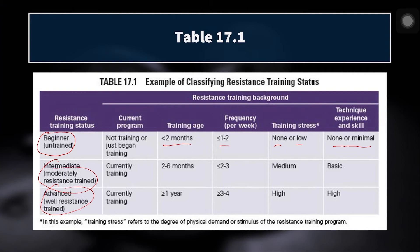An intermediate athlete will have been training for up to six months and can train two to three days a week. Now we want to progress the training stress to at least medium — we need to continue to provide an overload. They may have basic skill: a basic squat, a basic hip hinge, a basic press, and a basic pulling movement pattern, but perhaps lack the skill to perform something more complex like a power clean or a snatch.